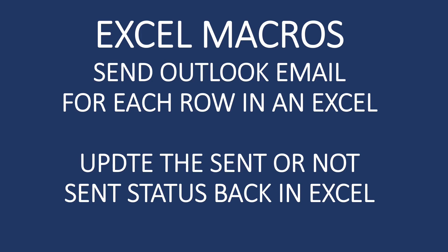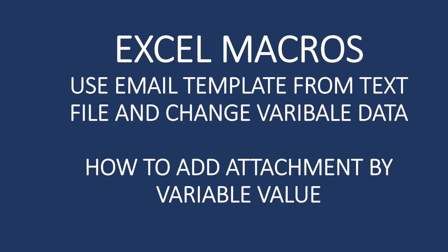Hello and welcome back to another video on Excel macros. In the last video on Outlook email automation, we saw how to automatically generate Outlook emails for each row in an Excel file, and how to update the status back in Excel when sending automated emails using an Excel macro. Today we are going to see how to change the template dynamically using variable data from Excel when sending automated emails.